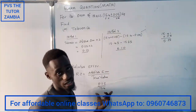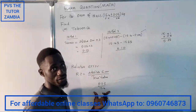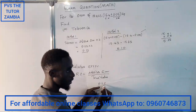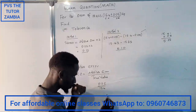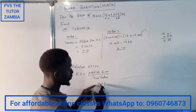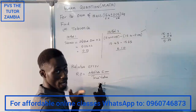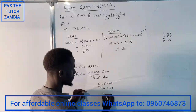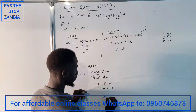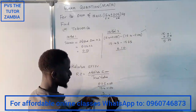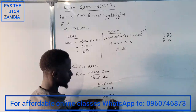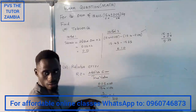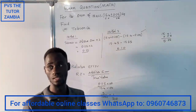To simplify this fraction, we look for a power of ten to multiply both top and bottom. Multiplying both by 100 gives us 5 over 1540. Now we simplify: 5 goes into 5 once, and 5 goes into 1540 a total of 308 times. So the relative error simplifies to 1 over 308.